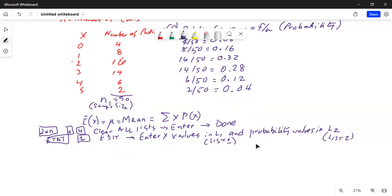Then press the right cursor key to move your cursor to the first line in L2, where we are going to enter the relative frequencies, not the number of patients. Which is 0.08, 0.16, 0.32, 0.28, 0.12, and 0.04.